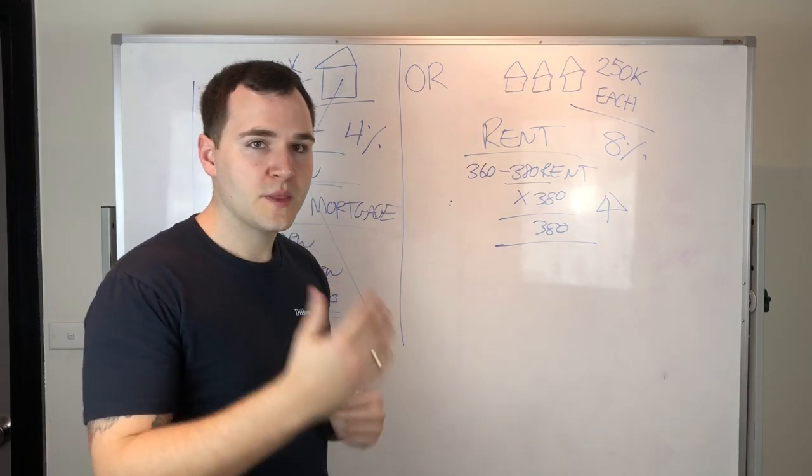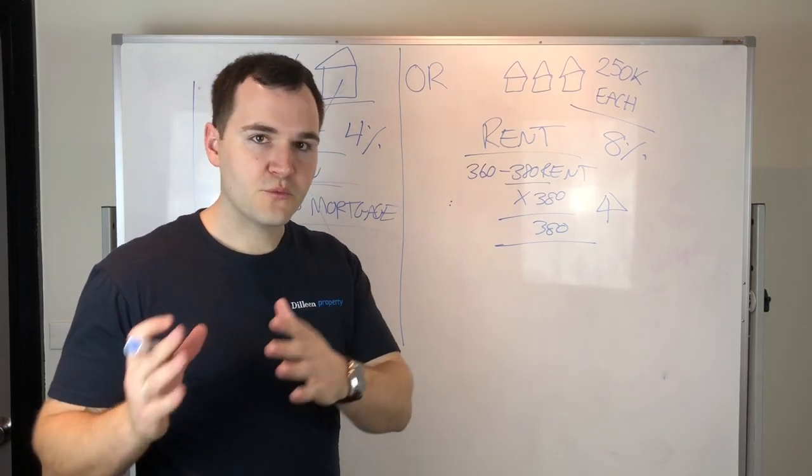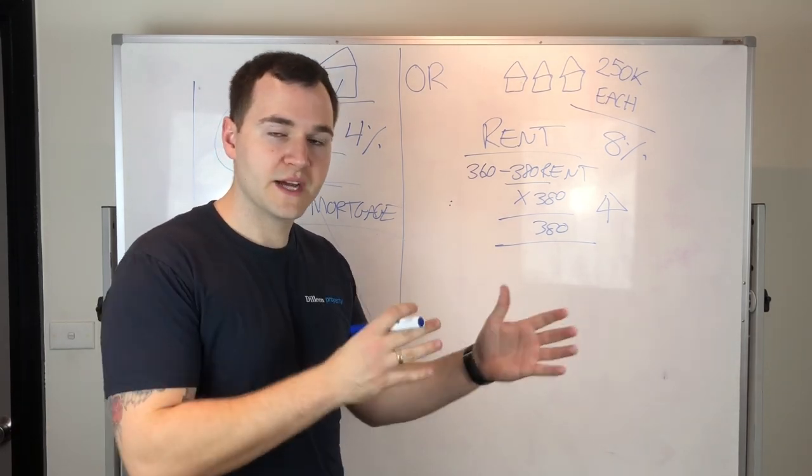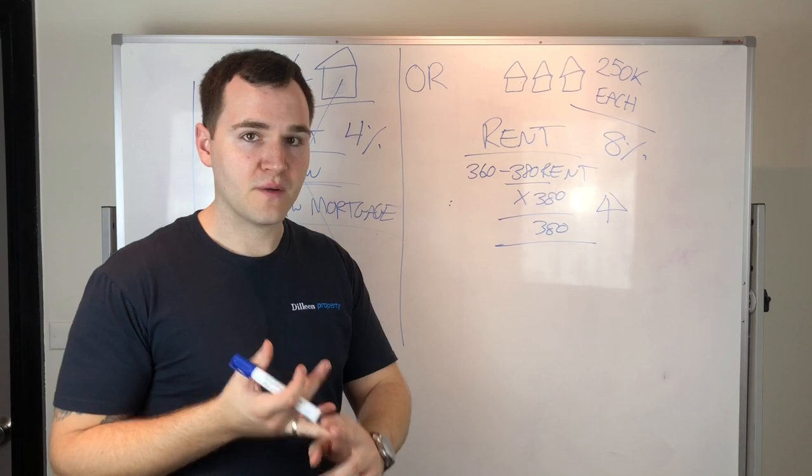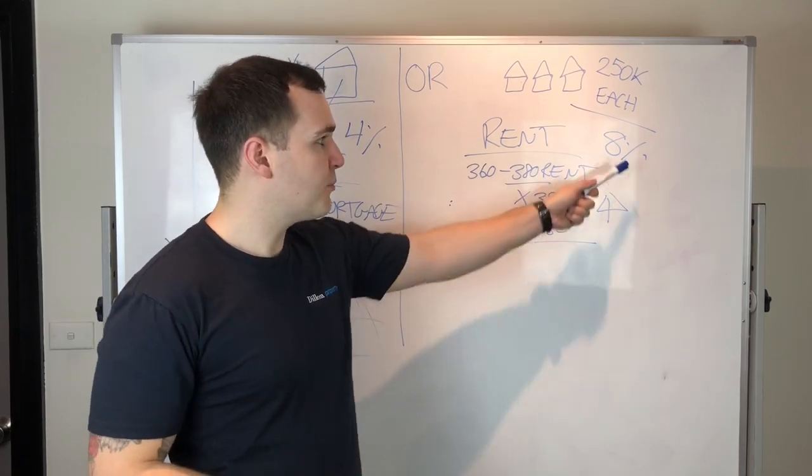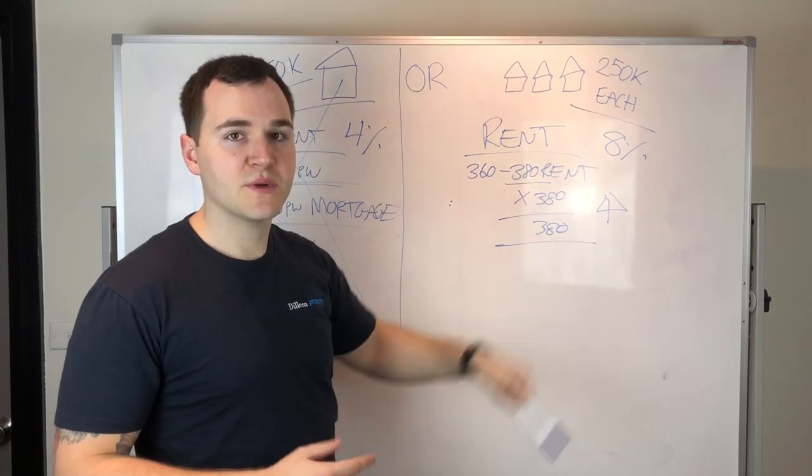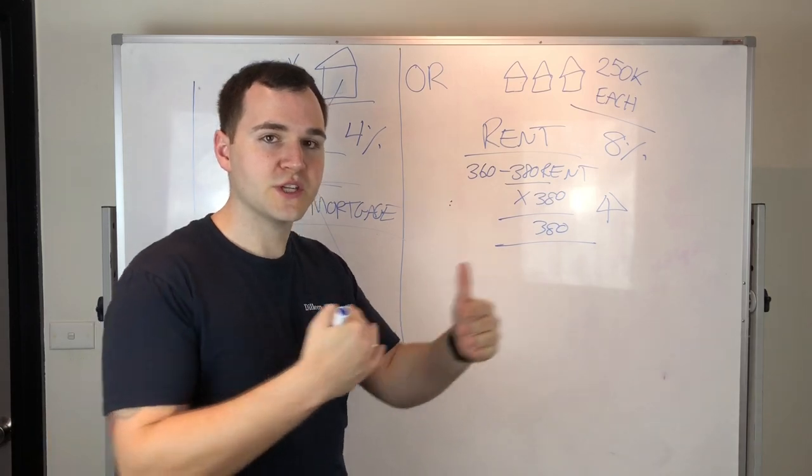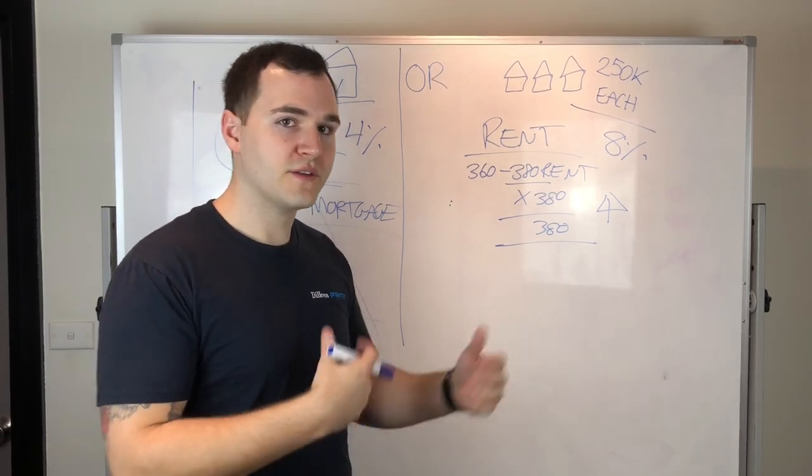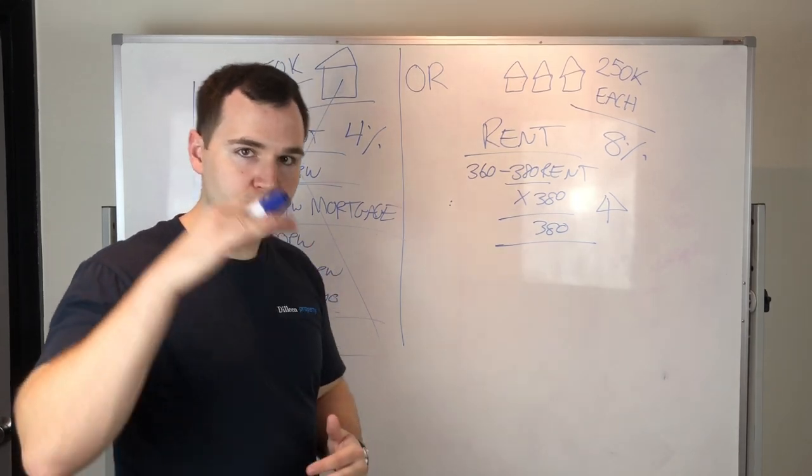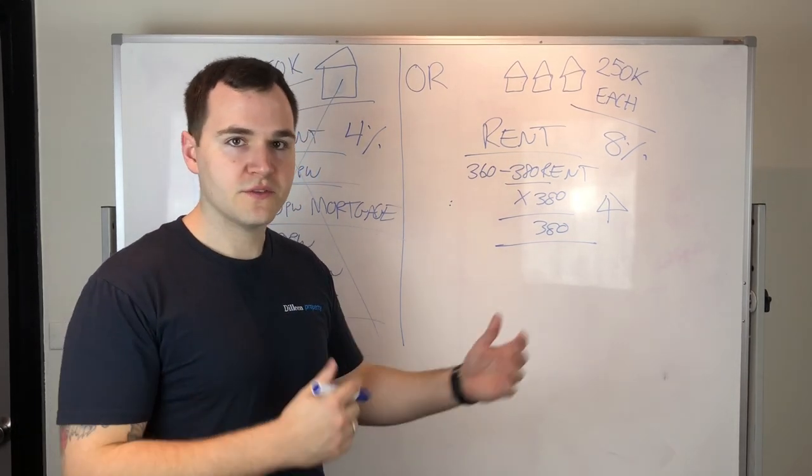My own portfolio, a lot of the properties that I've bought, the rent is double what the actual mortgage is because I've raised the rents over time. Another thing, I've bought from the get-go properties that have had 7, 8, 9% rental yields and over time I've gradually increased the rent. So now they've become 10% yields, 11, 12, 13, 14% and the loans have gone down as well naturally over time.